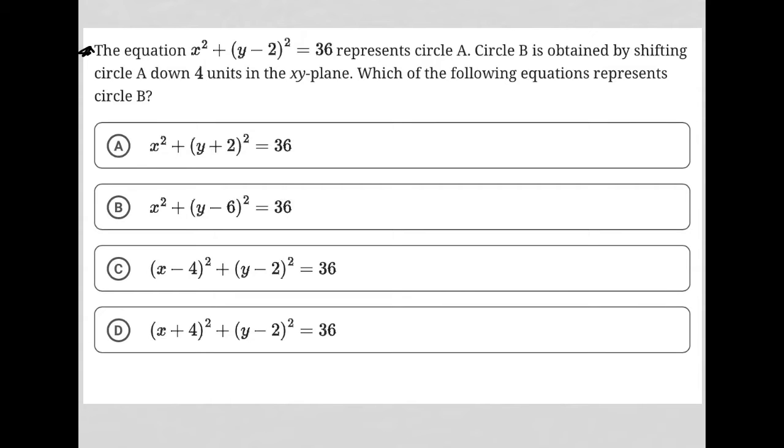This question says the equation x squared plus y minus 2 squared equals 36 represents circle A. So just to make sure we're aware, the circle equation looks like this.